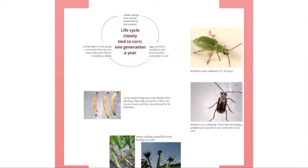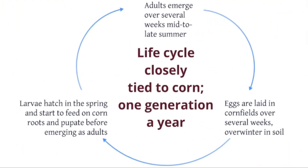Corn rootworms are beetles, and while adults can damage plants as well, it is the larval stage that is the most devastating to corn. Corn rootworms, like all beetles, go through complete metamorphosis, which means the mature stages do not resemble the adults. One of the most important characteristics of corn rootworm biology in terms of management is the fact that their life cycle is very closely tied to corn. Western and northern corn rootworms also have only one generation a year.